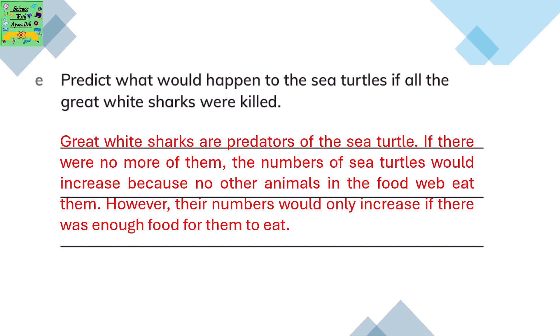Predict what would happen to the sea turtles if all the great white sharks were killed. The great white sharks are the predators of the sea turtles. If there were no more great white sharks, the number of sea turtles would drastically increase because there is nothing to eat them. However, the numbers would only increase if there was enough food for them, or else they would die of starvation.